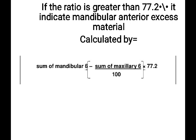If the anterior ratio is greater than 77.2%, it indicates mandibular anterior tooth material is in excess. To calculate mandibular anterior excess, the formula is: sum of mandibular 6 minus (sum of maxillary 6 divided by 100, multiplied by 77.2). The result obtained is the mandibular excess.